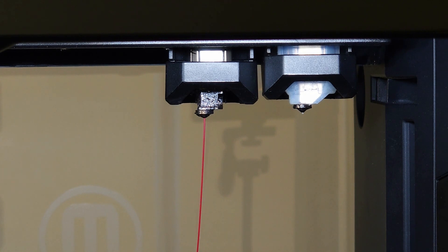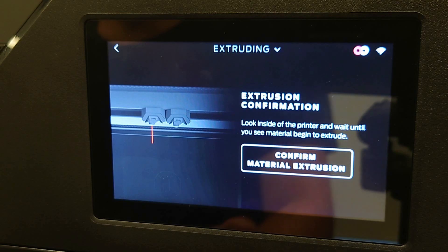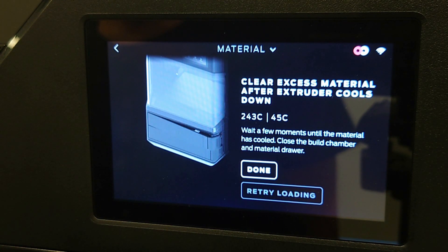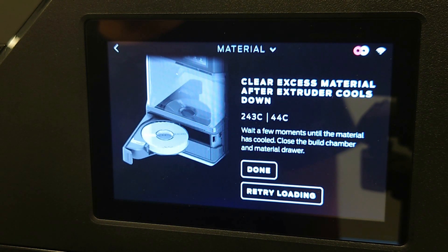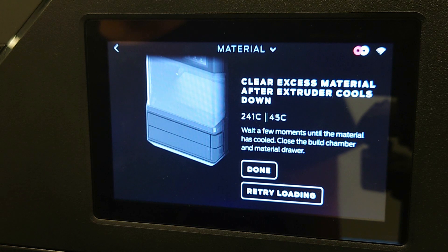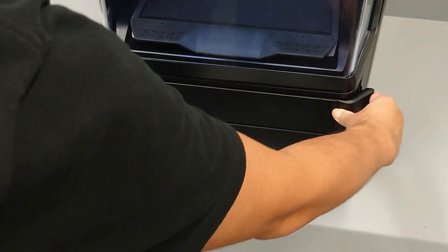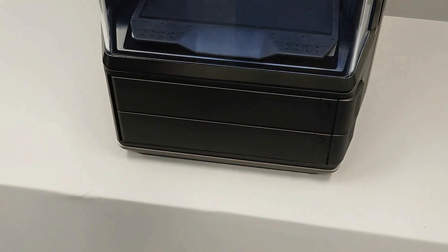Once the material is extruding onto the build plate, select confirm material extrusion. If you haven't already, you can close the material bay and you'll be ready to print.